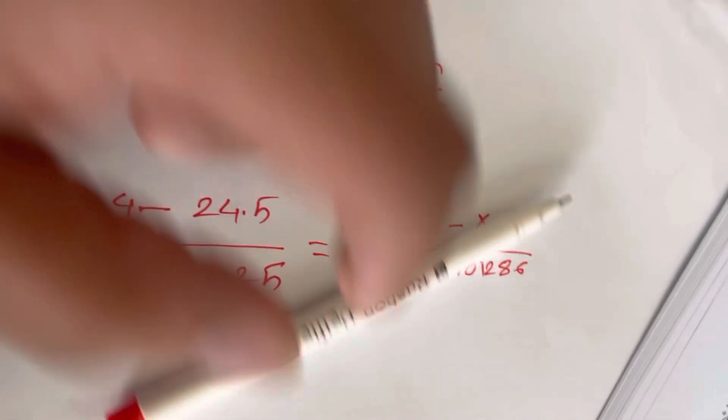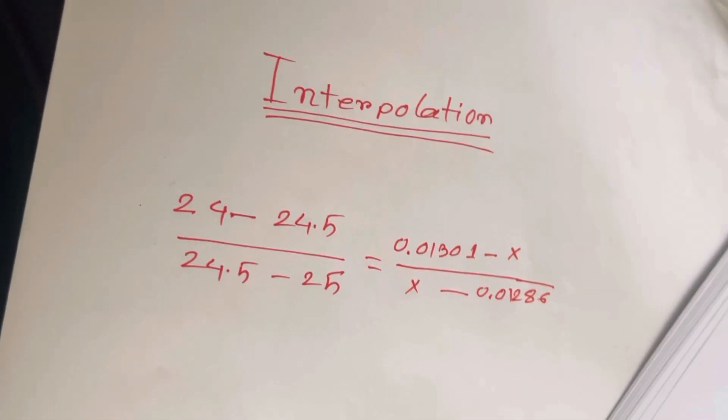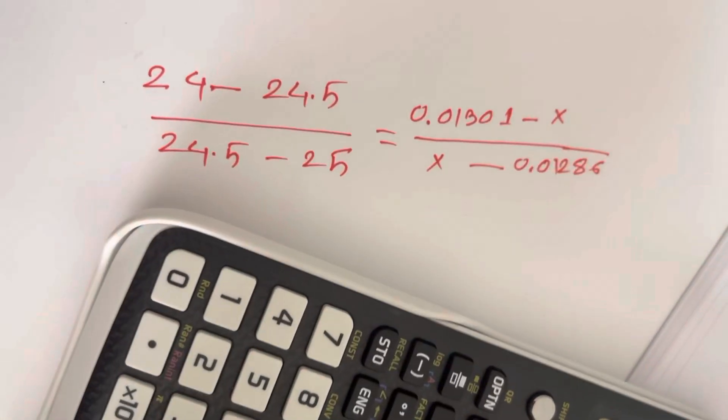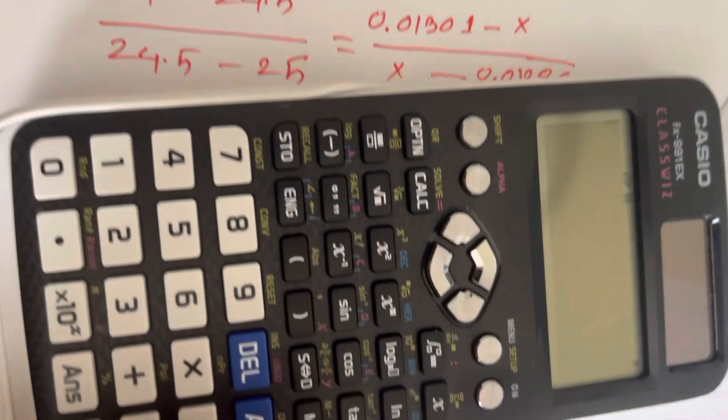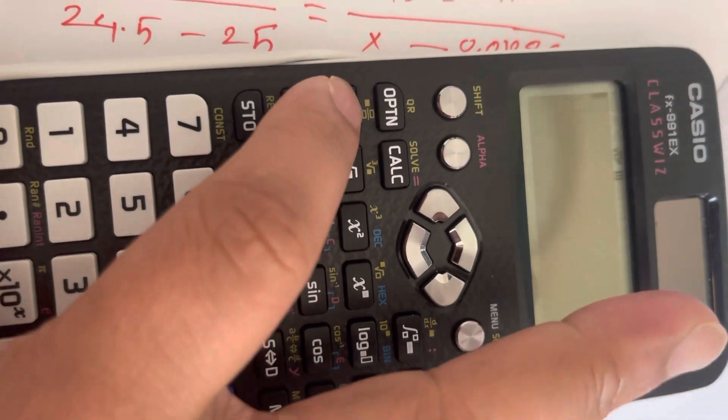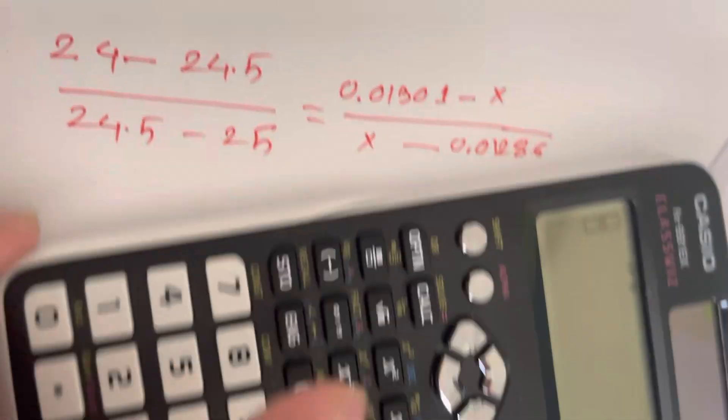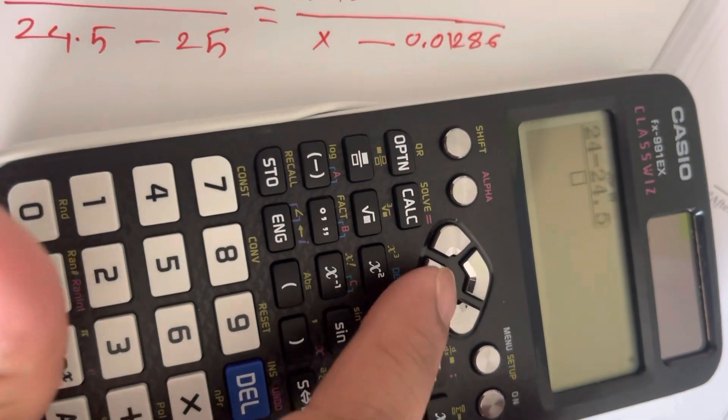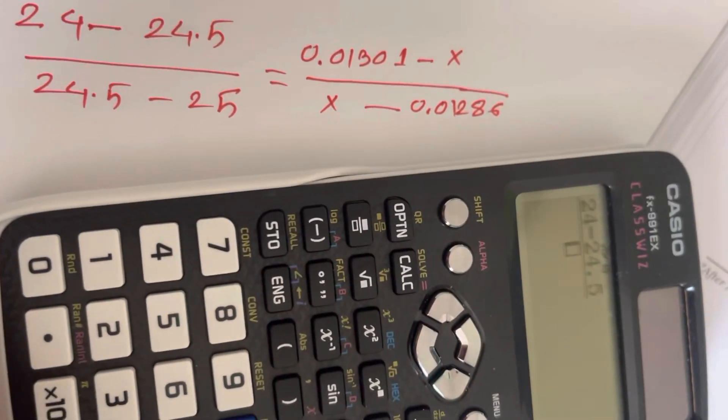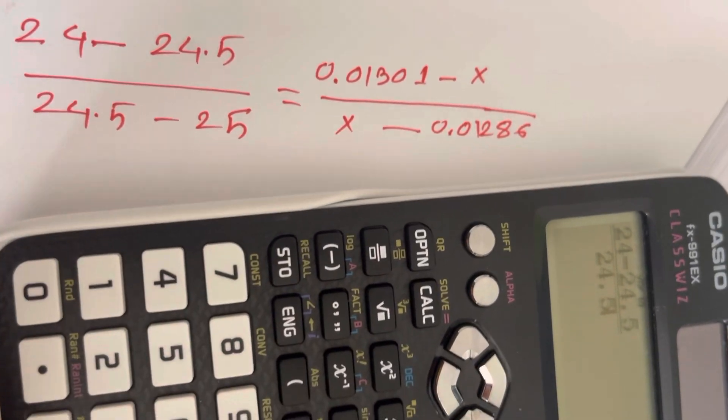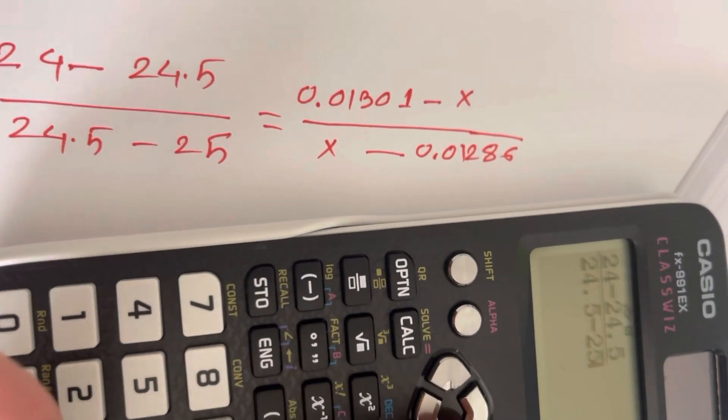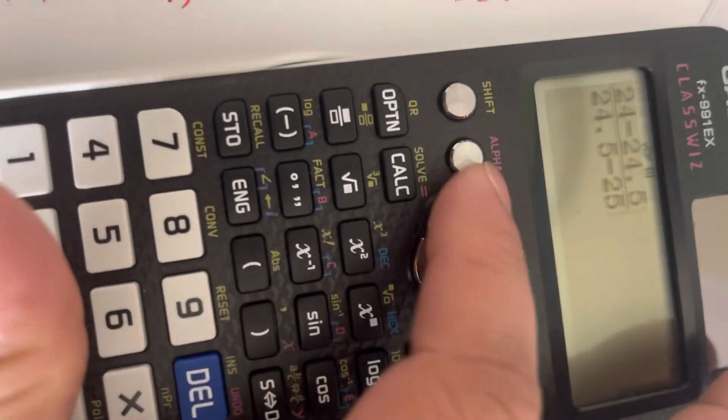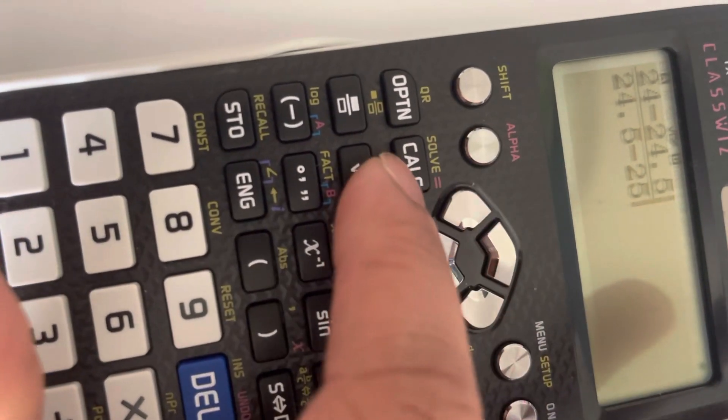For this kind of equation we can solve by using calculator very easily. First you need to click here and then 24 minus 24.5, and then down here 24.5 minus 25. And here alpha is equal.